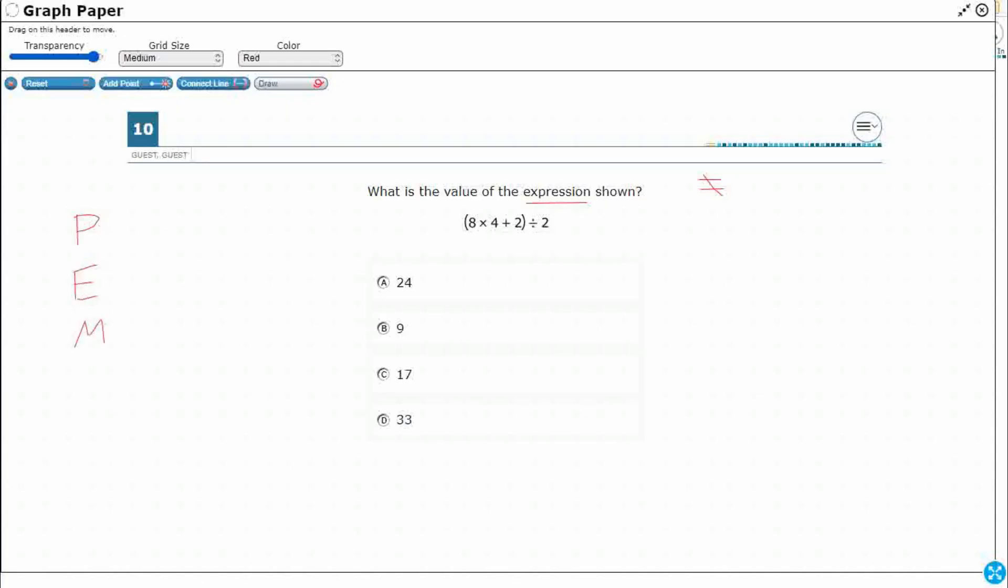So please excuse my dear Aunt Sally is how I was taught. Most of us were taught that. What does that mean? Well, there's four different levels of the order of operations. So first, we always deal with the parentheses.